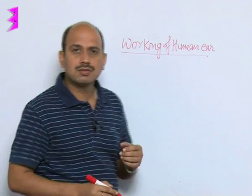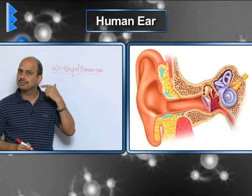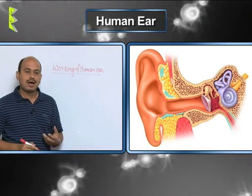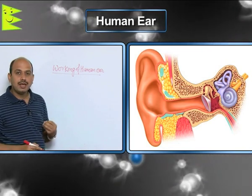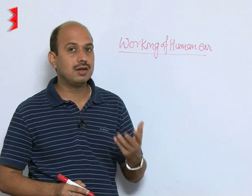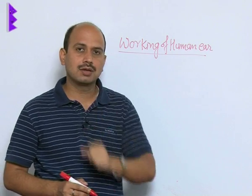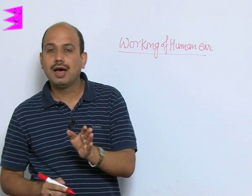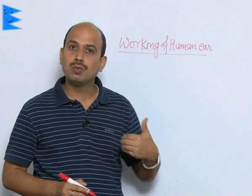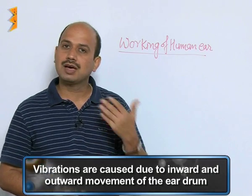Now what happens in this case - the upper portion here which you see in the ear is known as the pinna, which is used to collect the sound from all sides. As the sound comes, it is sent to the middle part of the ear where the ear drum is. If compression is coming, the ear drum is pushed inward, and if rarefaction is coming, the ear drum moves outward.